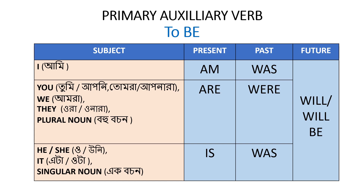If the subject is 'he', 'she', 'it', or a singular noun — for example: a boy, a girl, a table — in present tense we use 'is', past tense 'was', and future tense 'will' or 'will be'.